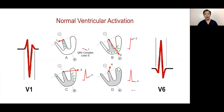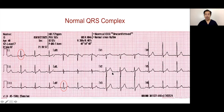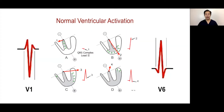In the pre-cordial leads, regarding R/S progression: in V1 you have a small R with a deeper S, becoming a taller R and shallower S as it transitions. At the transition point, R and S become nearly equal, then it transitions to a bigger R and smaller S in the lateral pre-cordial leads. The His bundle pierces part of the septum, goes left then back right, so the initial QRS is left to right in the septum, producing the small R in V1 and the septal Q-wave in V6.